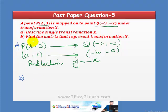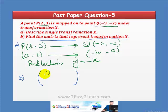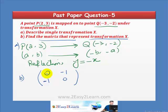Part b: Find the matrix that represents transformation X. By observation, the coordinates are flipped and their signs are also changed. The flip matrix is [0, 1; 1, 0], and since the signs of both coordinates also change, we apply a sign change to get the final matrix: [0, -1; -1, 0].